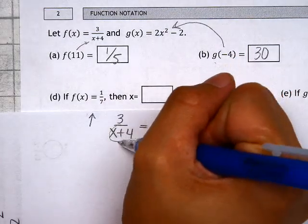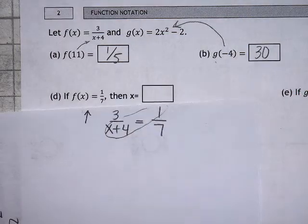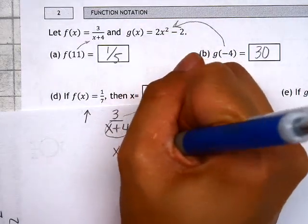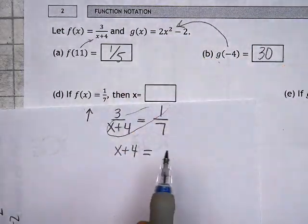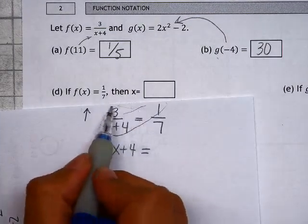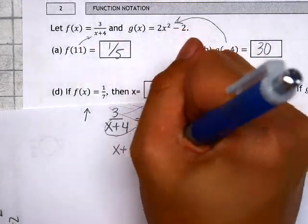x plus 4 on the bottom times 1 on the top is x plus 4. And that equals what we get from multiplying in the other direction. 3 times 7 comes out to be 21.